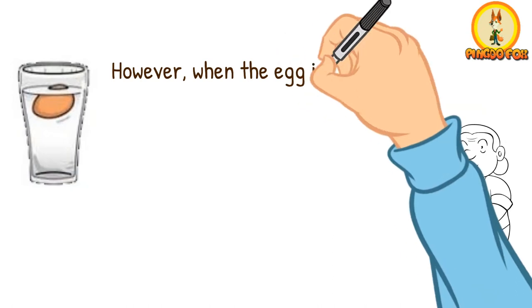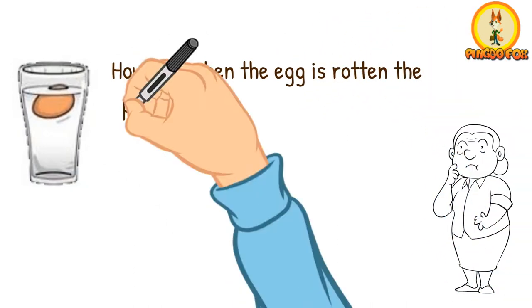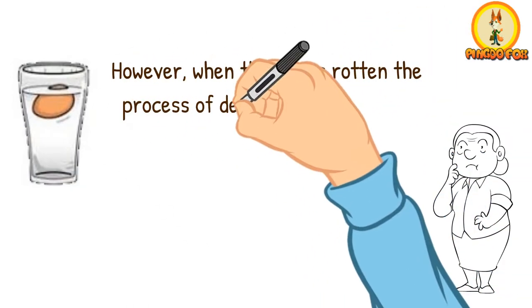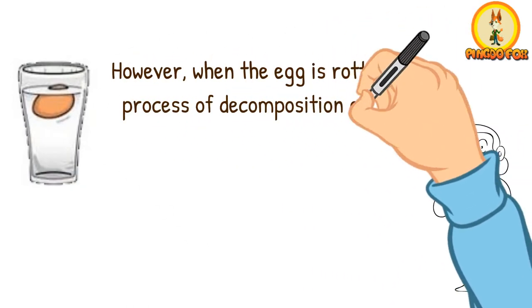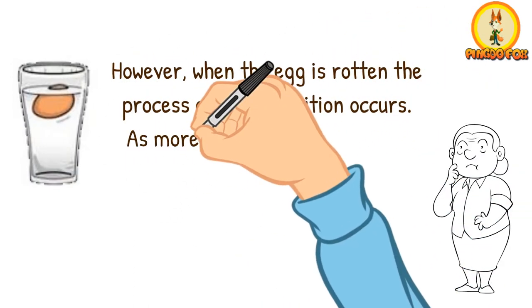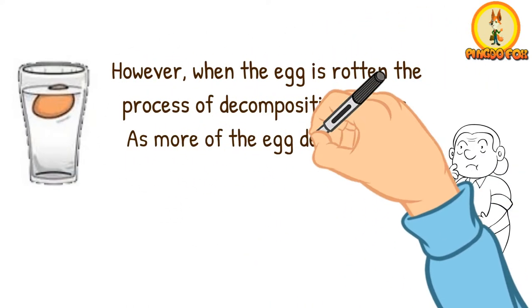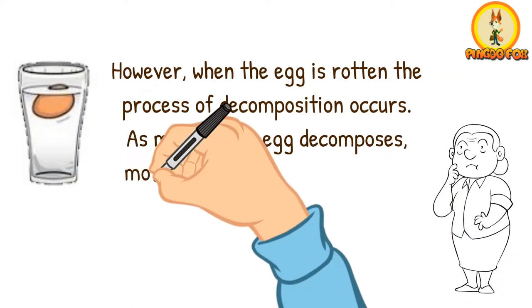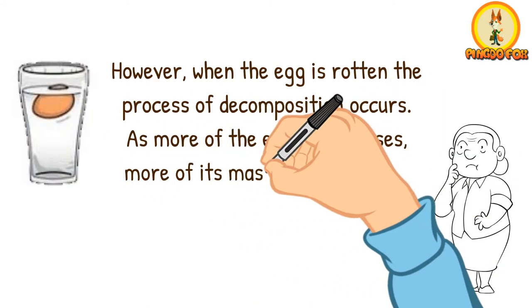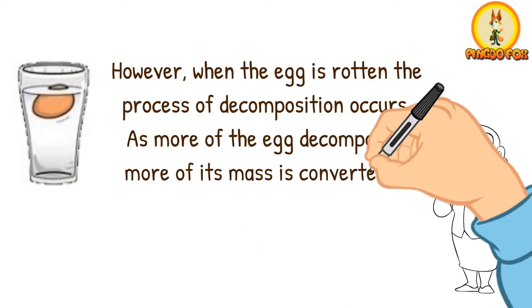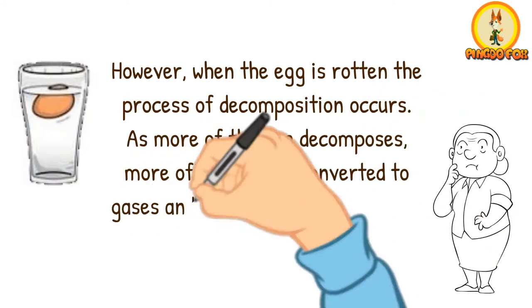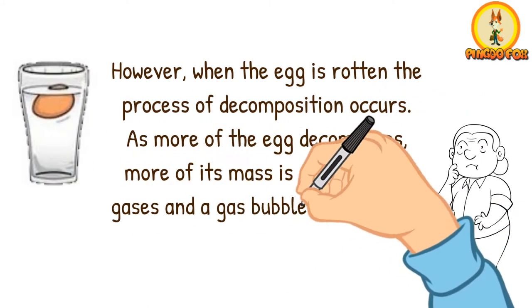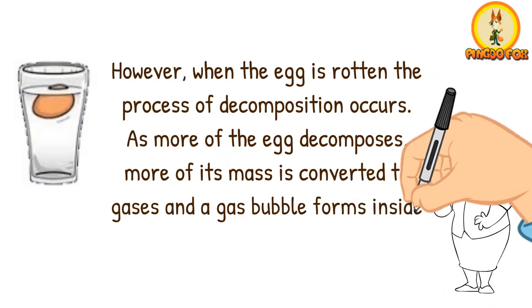However, when the egg is rotten, the process of decomposition occurs. As more of the egg decomposes, more of its mass is converted to gases, and a gas bubble forms inside the egg.